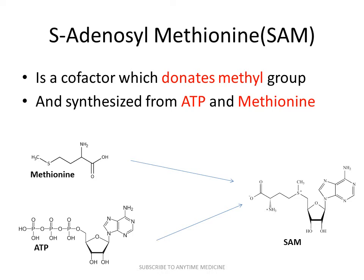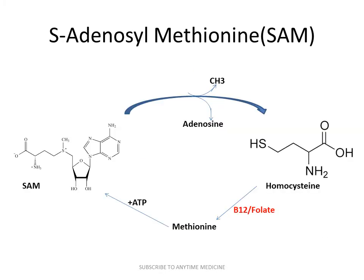Now we will see how S-adenosylmethionine, or SAM, works. SAM is a cofactor which donates a methyl group and is synthesized from ATP and methionine. As a function of SAM, it donates one CH3 methyl group from its structure and removes the adenosine group from it, producing homocysteine.